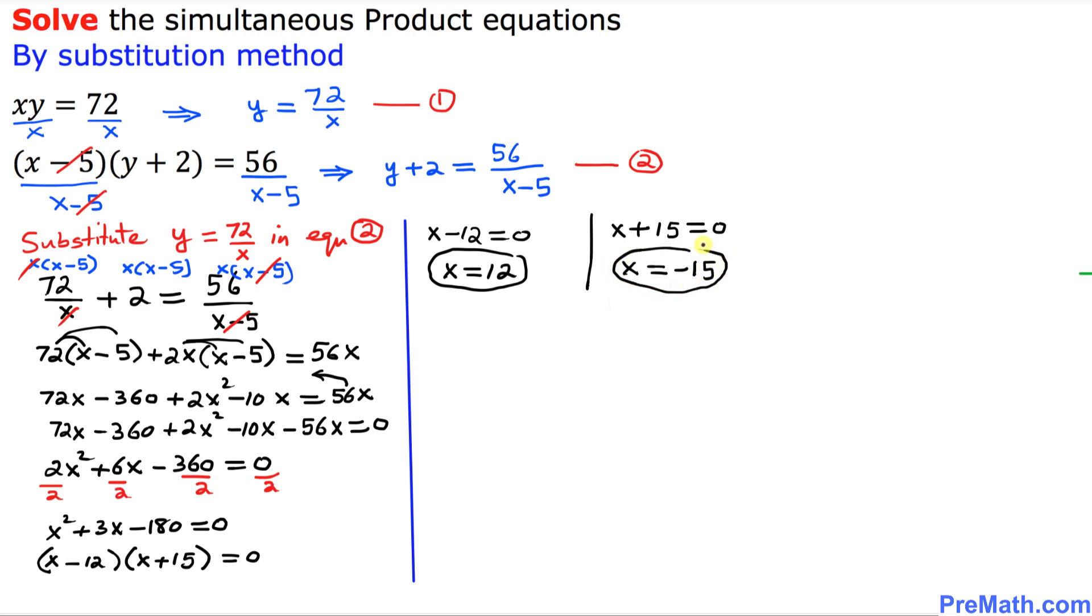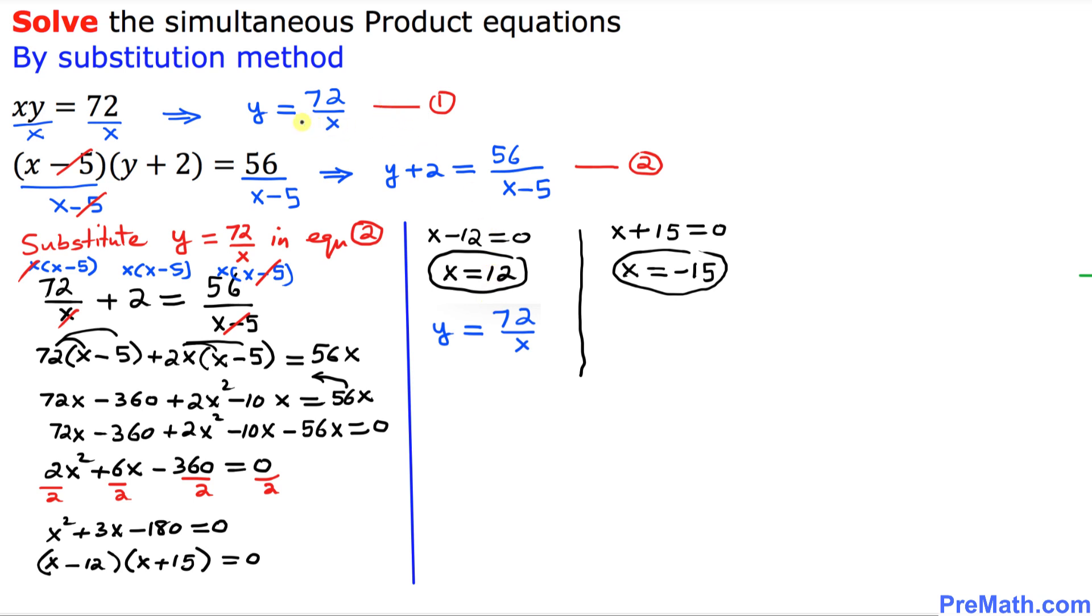So far, so good. And now from equation number 1, we know that y equal to 72 over x. Here we can easily find the value of y by just substituting x equal to 12 over here. Let's do that one. So y equal to 72 divided by x is 12. So that means y equal to simply 6.